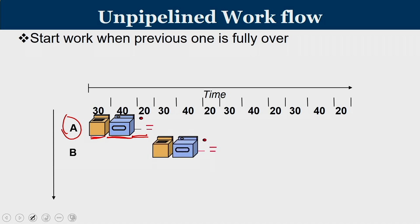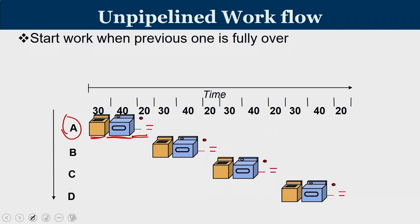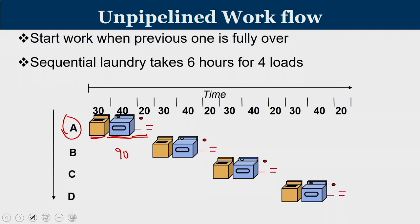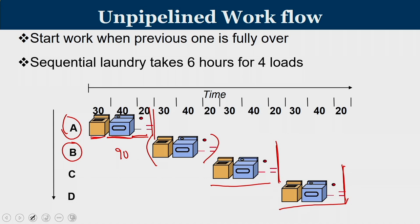In sequential laundry, once person A completes, person B starts — taking 30, 40, and 20 minutes respectively. Then C starts after B, and D after C. Each takes 90 minutes. This is sequential laundry, where the washing of the next workload starts only after the previous workload is completely done. With 4 such workloads, 90 × 4 = 360 minutes, or 6 hours total.